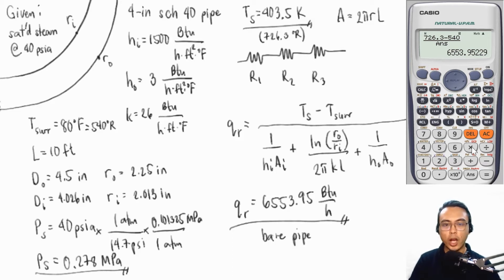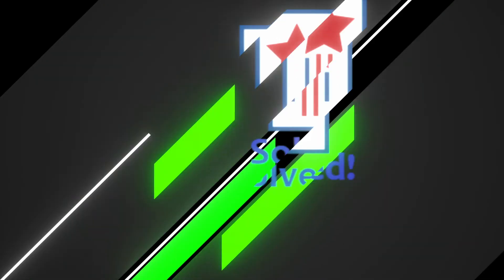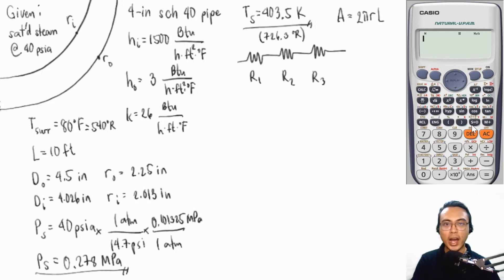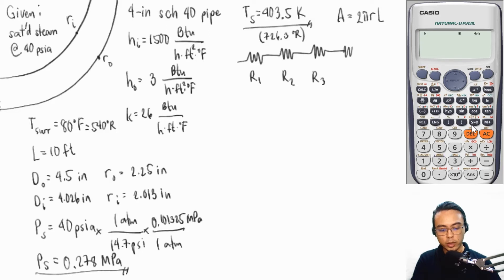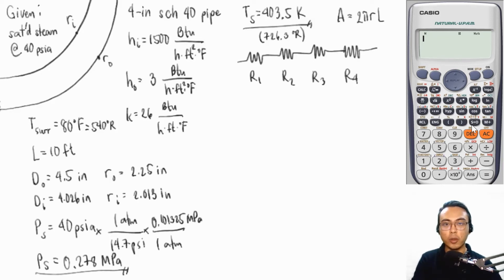For the next part, we want to see what happens to the rate of heat transfer if we place 2 millimeters of rubber insulation on the pipe. We are adding another conductive resistance, making our total resistances four. R1 and R4 are due to convection on the inside and outside respectively, R2 represents the resistance of the pipe wall, and R3 represents the resistance of the insulating material.